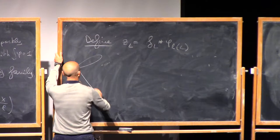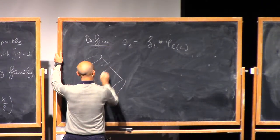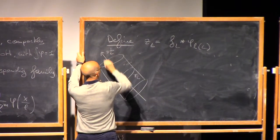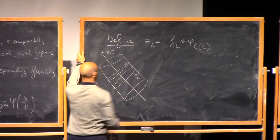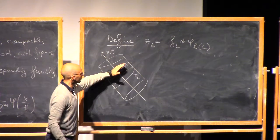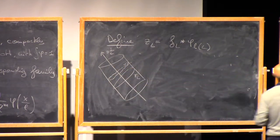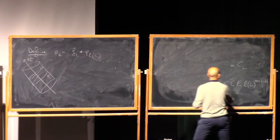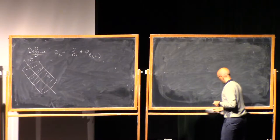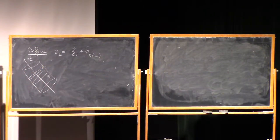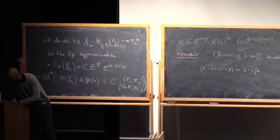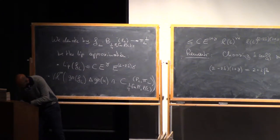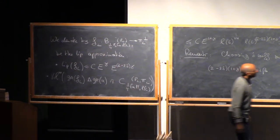We now have a function in this tilted system of coordinates. Here is π_L, and here is π_L^⊥. This function gives a certain graph in this system of coordinates. Now I want to tilt back to the original system of coordinates and get a function on my initial plane π₀ — the horizontal plane. The new function will be called G_L.